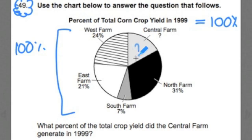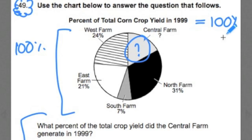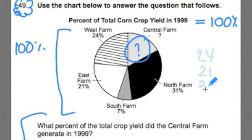We're missing a percent here. The question says: what percent of the total yield crop did the central farm generate in 1999? That's kind of what we determined just by looking at the diagram before even reading the question. We've got to find that missing amount. You could subtract from 100%, but I think it's better to just add up the known percents: 24%, plus 21%, plus 31%, plus 7%.